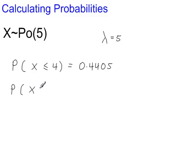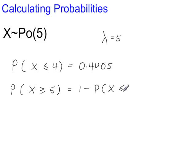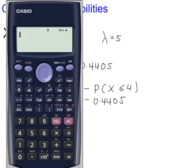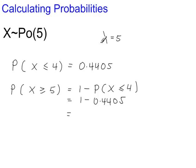The probability that x is more than or equal to 5. More-than-or-equal-to probabilities are not directly in the tables, but you can rewrite this as 1 minus P(X ≤ 4), which gives 1 − 0.4405 = 0.5595.